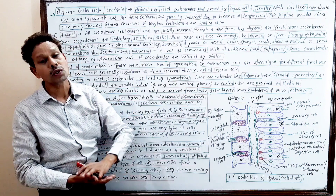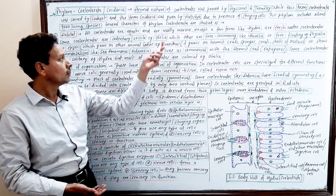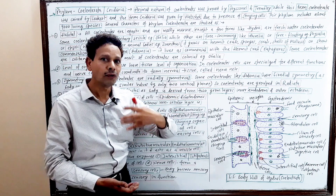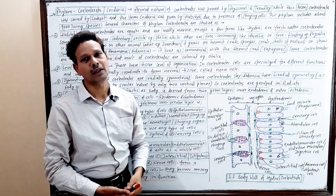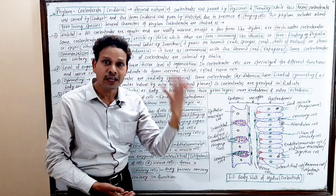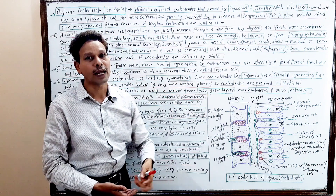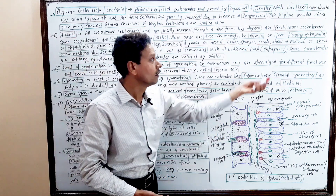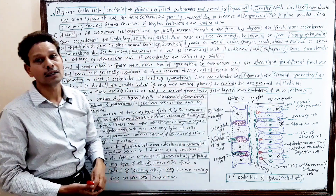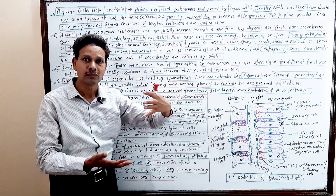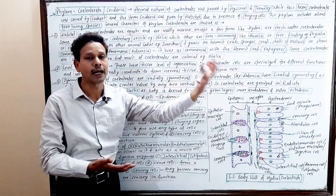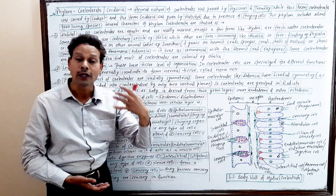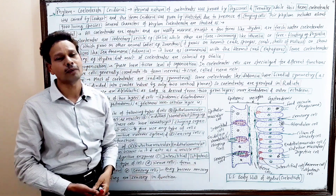Some are free-swimming, like Aurelia. Some are free-floating, like Physalia. Some are solitary — they live independently — like Hydra. And some are found in groups; they are colonial forms.